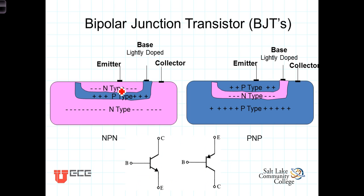There are two basic types of BJTs: the NPN transistor and the PNP transistor. Each of them are made of three different areas on a silicon substrate, consisting of the emitter, the collector, and the base. This structure effectively has two back-to-back PN junctions.